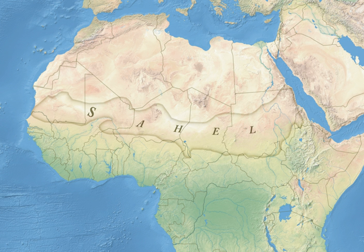The Western Sahel fell to France in the late 19th century as part of French West Africa. Chad was added in 1900 as part of French Equatorial Africa. The French territories were decolonized in 1960. The Eastern Sahel did not fall to the European powers but was annexed by Muhammad Ali of Egypt in 1820, and came under British administration as part of the Sultanate of Egypt in 1914. The Sudanese Sahel became part of independent Sudan in 1956, and South Sudan in turn achieved its independence from Sudan proper in 2011.